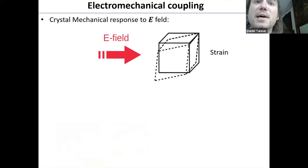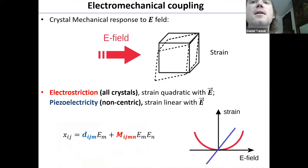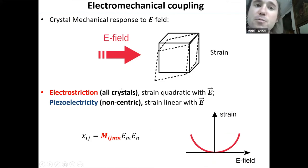Electrostriction is an electromechanical coupling. For example, it couples a strain to an electric field, and you're all probably familiar with piezoelectricity, which couples a strain linearly with an electric field for non-centric materials. But electrostriction is present in all crystal classes, and it couples a strain quadratically with an electric field. And so here's an expression for the strain, which includes the piezoelectric and electrostriction tensors. And in what follows, we're only going to be dealing with the electrostriction.